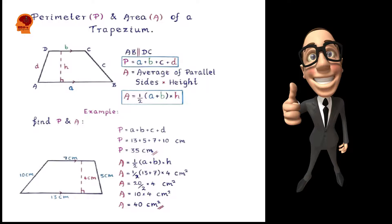Let's calculate the perimeter and area of a trapezium using this example. The perimeter is the sum of all the sides: 13 + 5 + 7 + 10 centimeters = 35 centimeters. To find the area: Area = ½ × (13 + 7) × 4 = ½ × 20 × 4 = 10 × 4 = 40 centimeters squared.